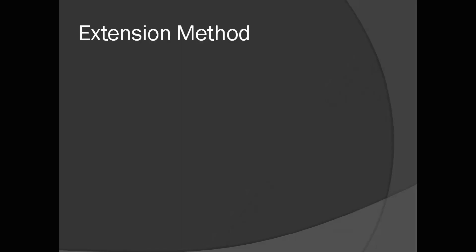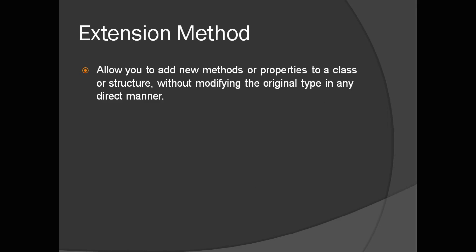So let us see what an extension method is. An extension method allows us to add new methods or properties to our class or structure without modifying the original type in any direct manner. As the name suggests, an extension method basically extends the functionality of your class. In object-oriented programming, the word 'extend' is used for inheritance, so similarly, extension methods extend the functionality of a class without modifying the original type.